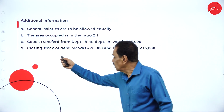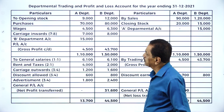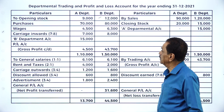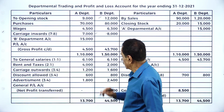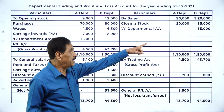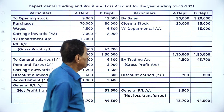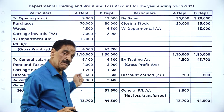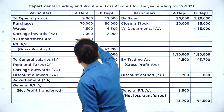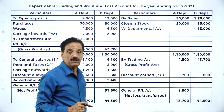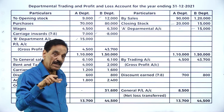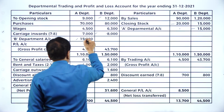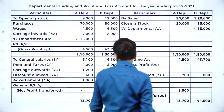Goods are transferred from B department to A department worth 15,000. Closing stock of A was 20,000. Opening stock: 9,000 and 12,000. Purchases: 70,000 and 80,000. Wages: 7,000 and 8,000. Sales: 90,000 and 1,20,000. Closing stock: 20,000. This is an internal transfer from B department to A department — credit B department and debit A department.